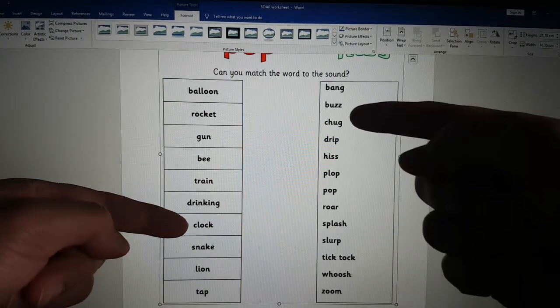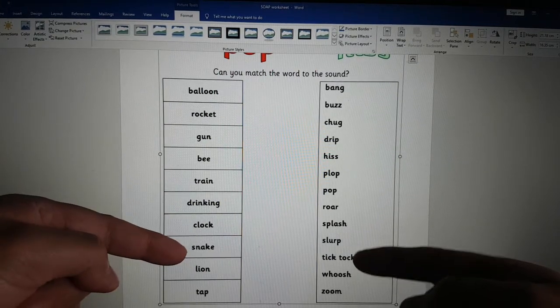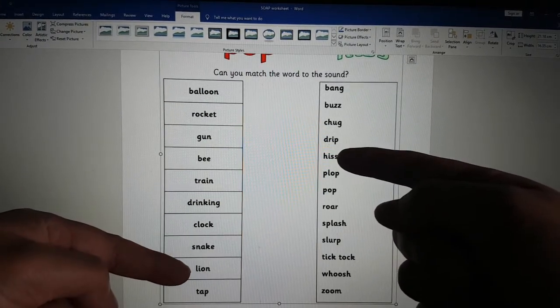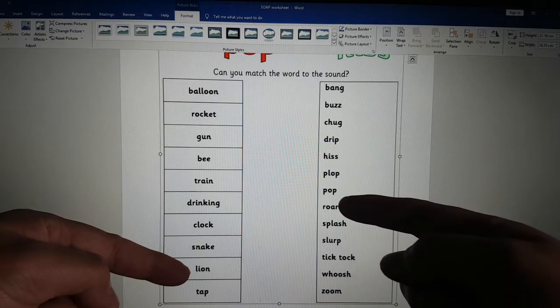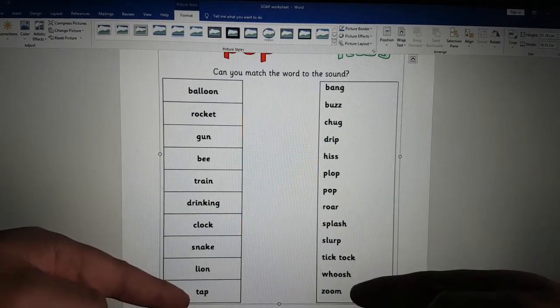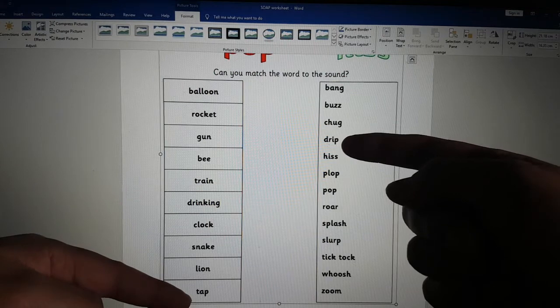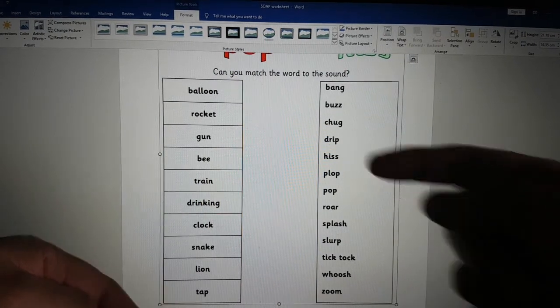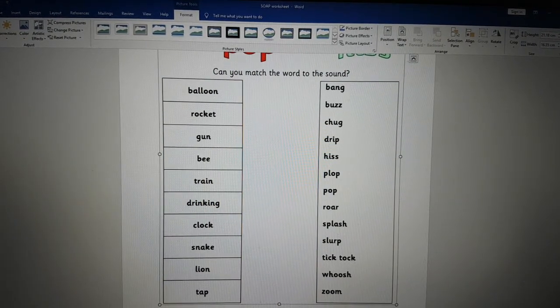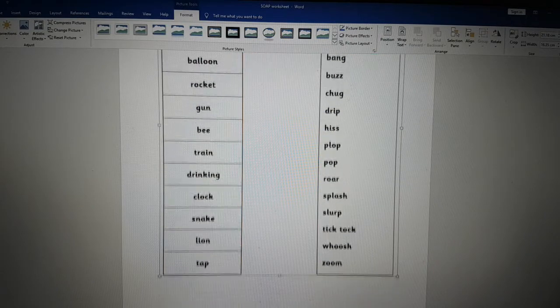A clock will tick tock. A snake will hiss. A lion will roar. And a tap, a water tap, will drip, drip, drip. So onomatopoeia, much easier I think than similes.